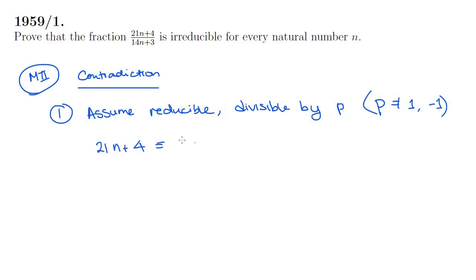But first, what does this mean? This assumption means that 21n plus 4 is congruent to 0 mod P. That is to say, when 21n plus 4 is divided by P, it gives a remainder of 0. And also, this assumption means that 14n plus 3 is congruent to 0 as well, mod P. And let's call that equations 1 and 2.